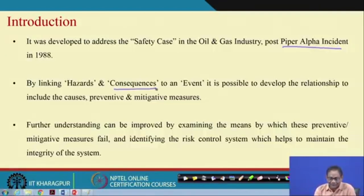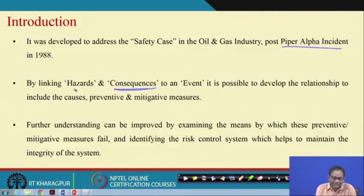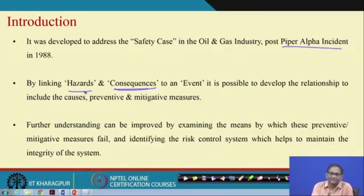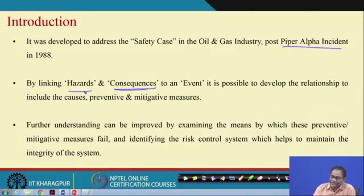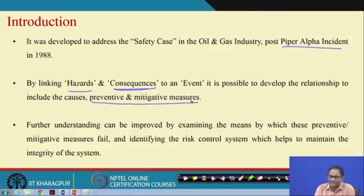If the accident scenarios represent the consequences, and the basic event side represents component-level hazards, then we are linking from hazards to consequences — that is, the causes of hazard occurrences through to consequences. It shows the total relationship, and another very important aspect is that it identifies the preventive and mitigating measures required along different accident paths.